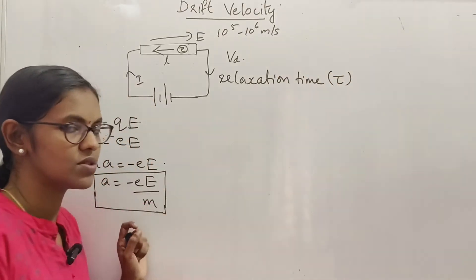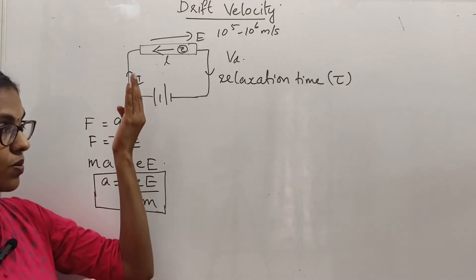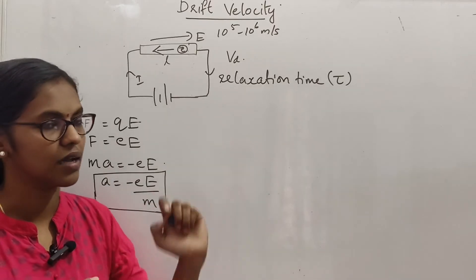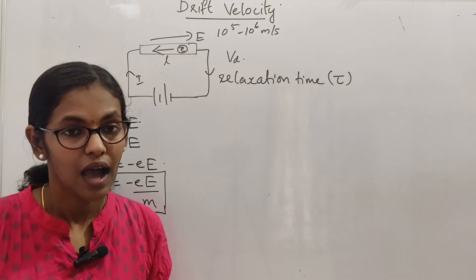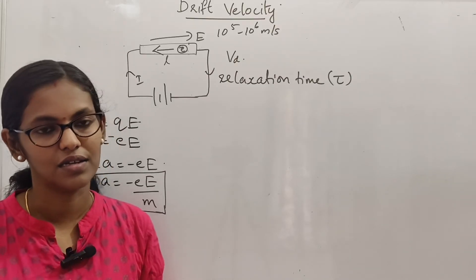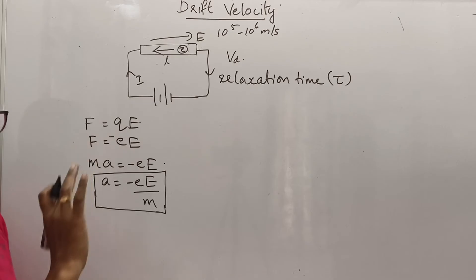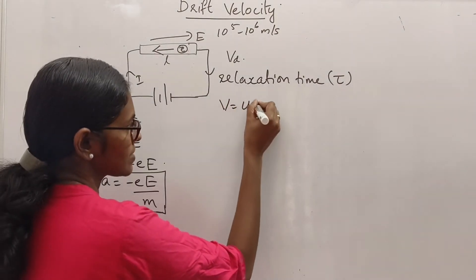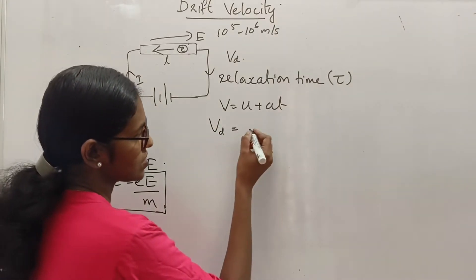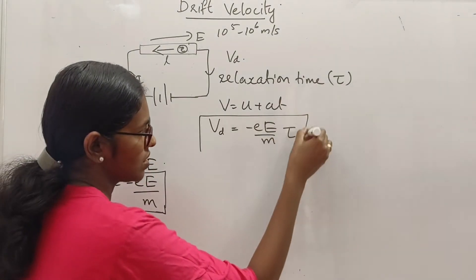We are representing the relaxation time as tau. The relaxation time is the average time interval between successive collisions of electrons with the atoms of the conductor. Using the kinematic equation V is equal to U plus A times T, where the final velocity is the drift velocity Vd, the initial velocity U is zero, acceleration is minus E divided by M, and time is the relaxation time tau. So Vd is equal to minus eE divided by m, times tau. This is the expression for drift velocity.